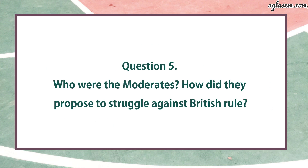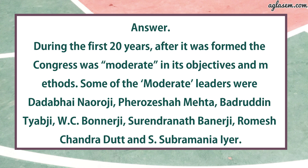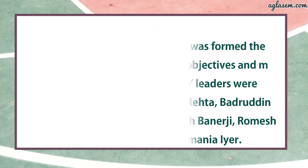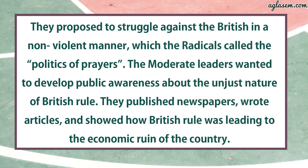Question number five: Who were the moderates? How did they propose to struggle against British rule? During the first 20 years after it was formed, the Congress was moderate in its objectives and methods. Some of the moderate leaders were Dadabhai Naoroji, Feroz Shah Mehta, Badruddin Tyabji, W.C. Bonnerjee, Surendranath Banerjee, Romesh Chunder Dutt, and S. Subramania Iyer. They proposed to struggle against the British in a non-violent manner, which the radicals called the politics of prayers. The moderate leaders wanted to develop public awareness about the unjust nature of British rule.